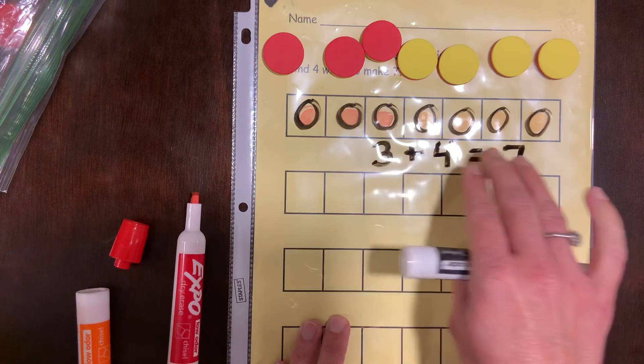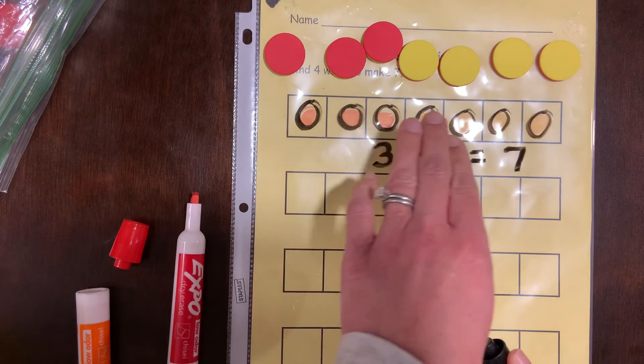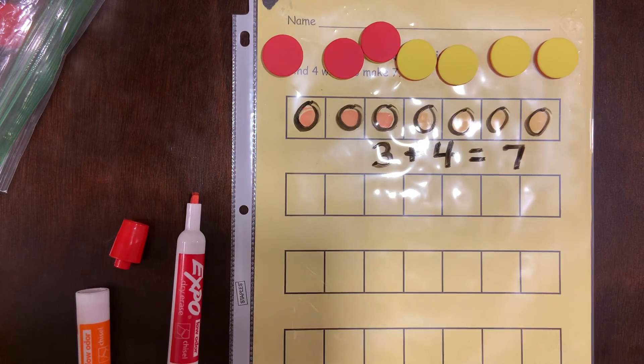Now if that feels too hard, that's okay. Just practice that great math talk of three and four makes seven. All right. See if you can continue this wonderful work on your own.